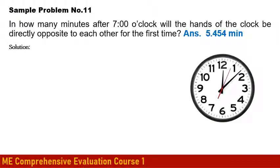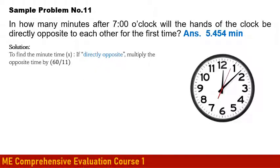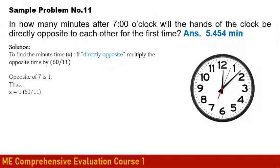Sample Clock Problem 1: In how many minutes after 7 o'clock will the hands be directly opposite each other for the first time? The shortcut: multiply the opposite hour (1 o'clock, since 1 is opposite to 7) by 60/11. That gives 1 × (60/11) = 5.454 minutes. So after approximately 5.454 minutes past 7 o'clock, the hands will be directly opposite.